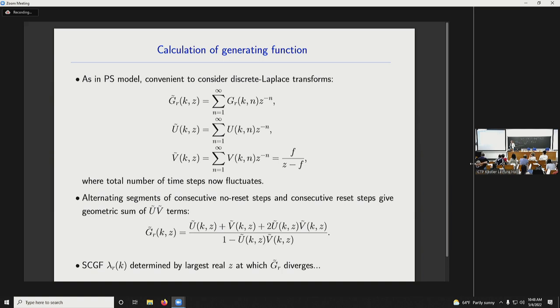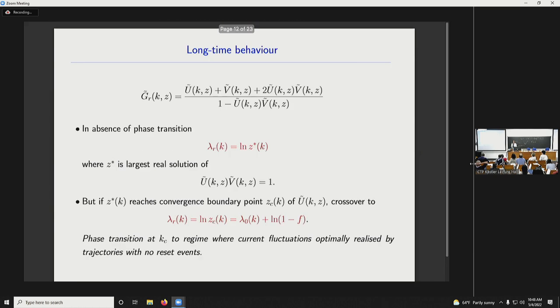So you end up just doing a geometric sum. And you can find very simply that g tilde has this form. So you see the familiar geometric denominator and the numerator just comes from boundary terms. And actually, you don't even have to do the inverse Laplace transform to find the long-time behaviour. You can get the scale cumulant generating function directly. It's determined by the largest, with my sign convention, the largest real Z at which this object diverges. And in the absence of a phase transition, that's super easy. This diverges when the bottom is zero. Let's call that value of Z, Z star. And the scale cumulant generating function is then just the log of Z star.